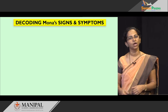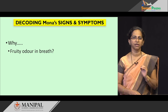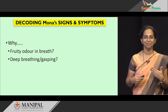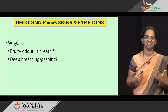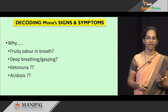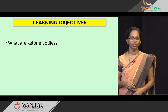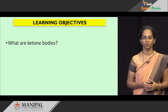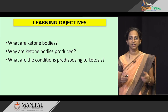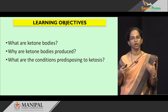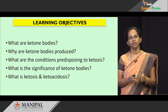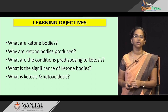Let us start decoding Mona's signs and symptoms one by one. Why did Mona have a fruity odor in her breath? Why is she presenting with deep breathing or gasping? What has made her respiratory center stimulate, and why is she breathing at a fast rate? What is ketonuria — what has appeared in her urine? And why is she presenting with acidosis? The learning objectives for this session are: what are ketone bodies, why does the body produce them, what conditions predispose a person to produce more ketone bodies, what is their significance in metabolism, and finally what is ketosis and how does it progress towards ketoacidosis?